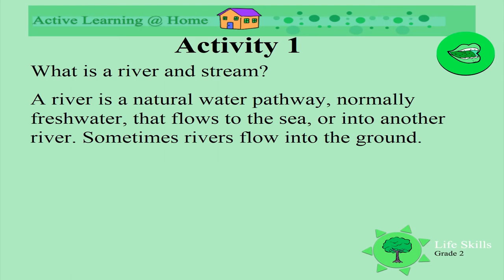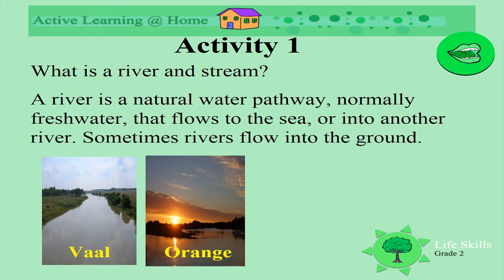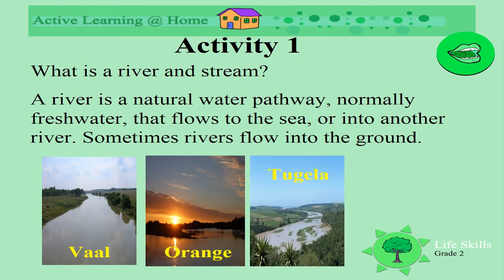What is a river and stream? A river is a natural pathway, normally fresh water, that flows to the sea or into another river. Sometimes rivers flow into the ground. Do you know these rivers in South Africa? This is the Vaal, this is a picture of the Orange River, and this is a picture of the Tugela River.